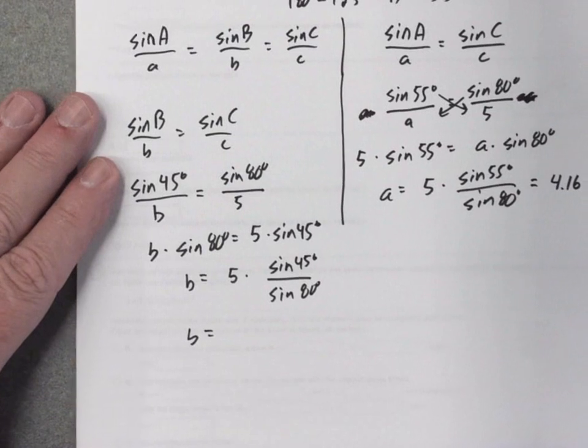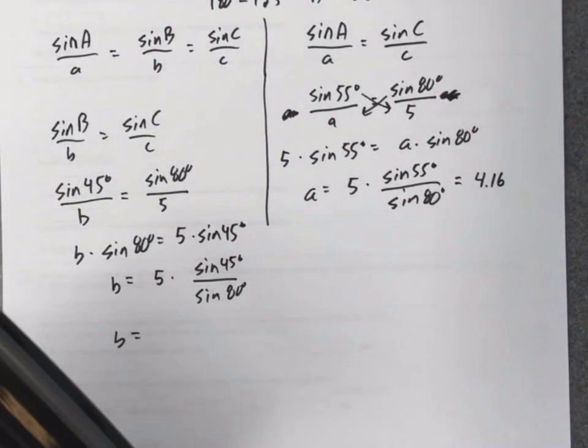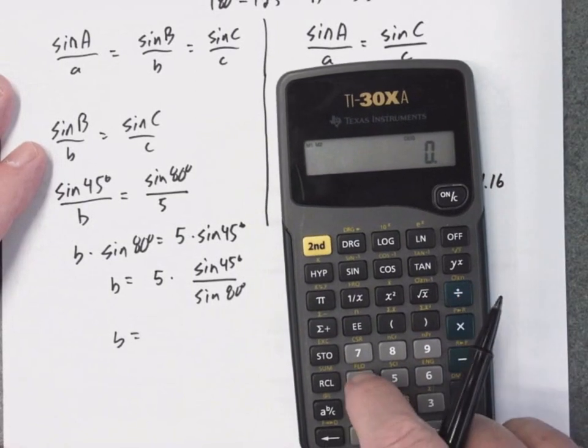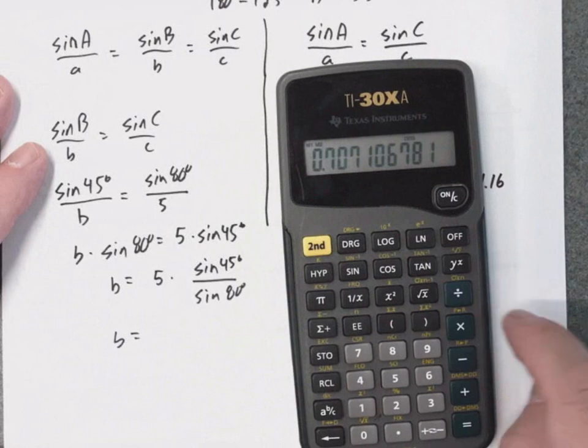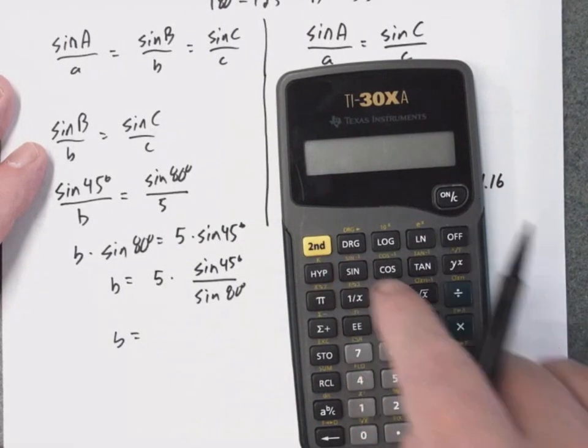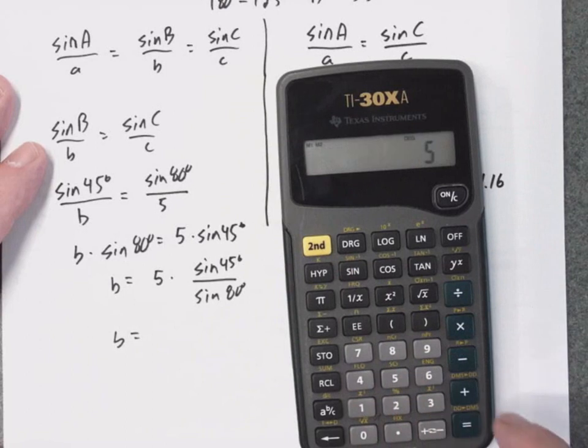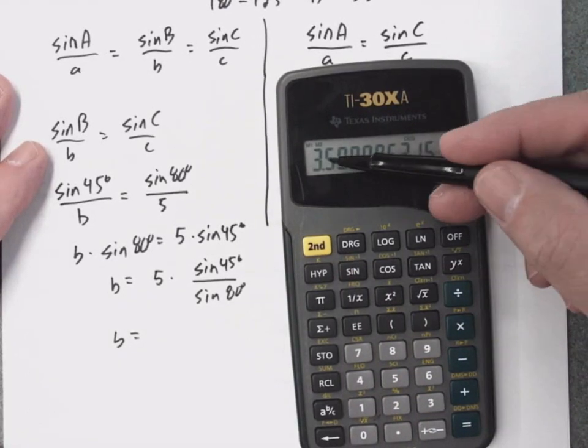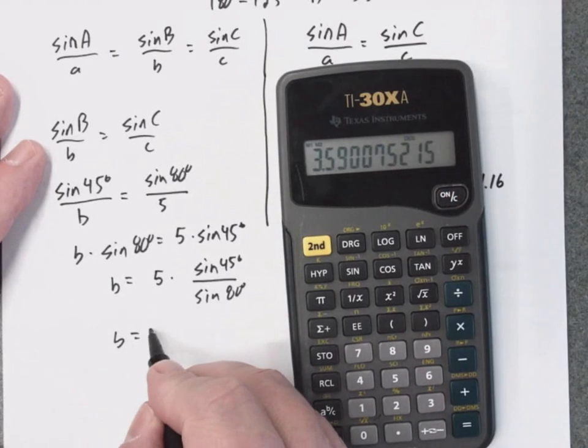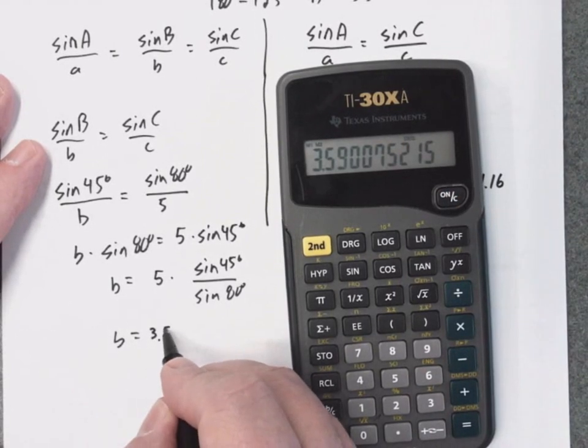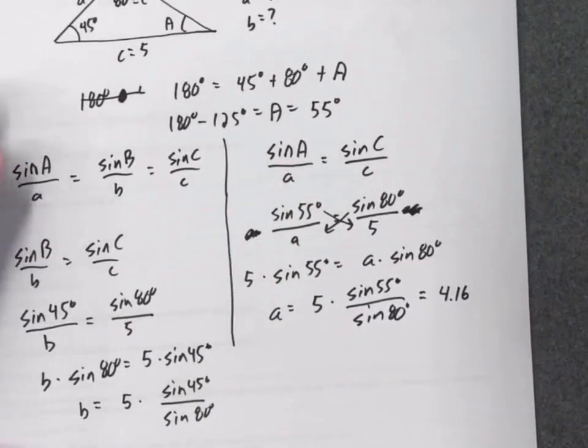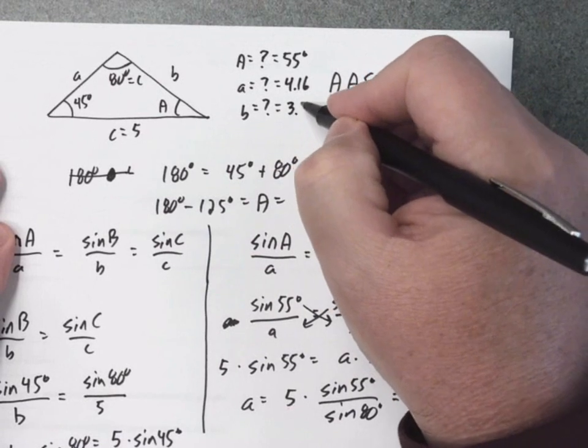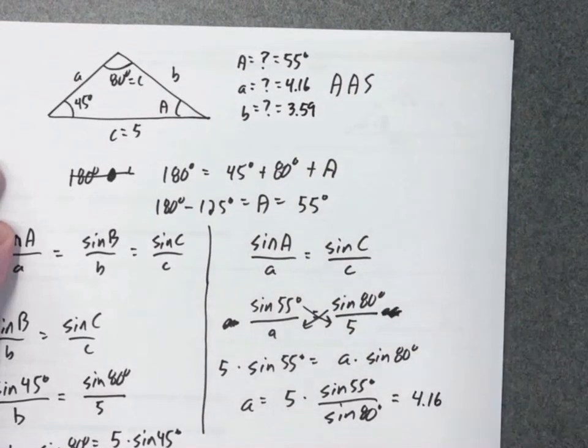Grab my calculator. Once again, make sure I'm still in the degree mode. I'll enter 45 sine divided by the sine of 80 times 5. So, I got 3.590. If I want two decimal places, looks like 3.59. So then I have now determined the three remaining parts of this triangle.